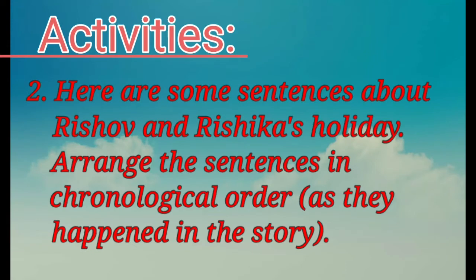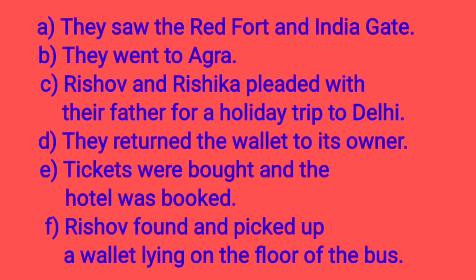Activities number two: here are some sentences about Rishabh and Rishika's holiday. Arrange the sentences in chronological order as they happened in the story. A: they saw the Red Fort and India Gate. B: they went to Agra. C: Rishabh and Rishika pleaded with their father for a holiday trip to Delhi. D: they returned the wallet to its owner. E: tickets were bought and the hotel was booked. F: Rishabh found and picked up a wallet lying on the floor of the bus.